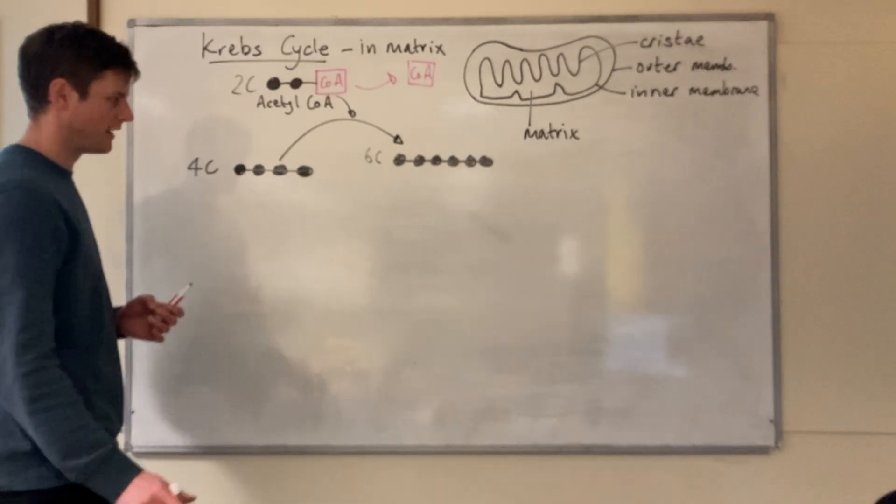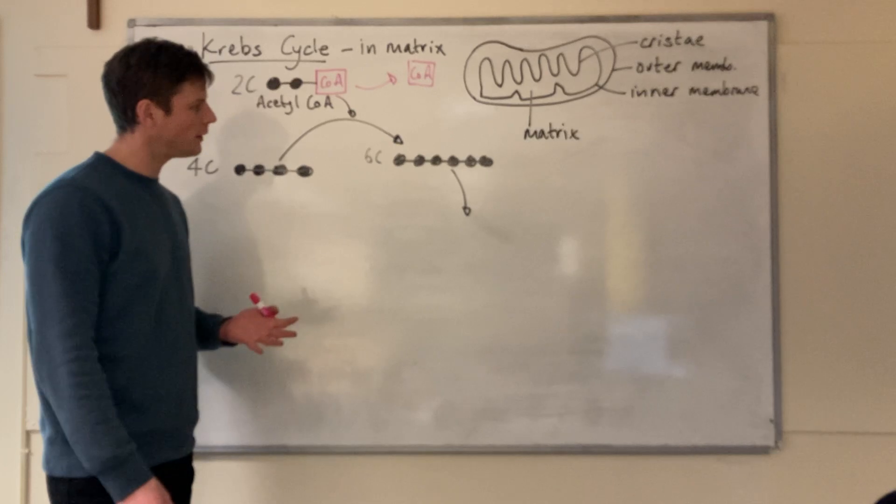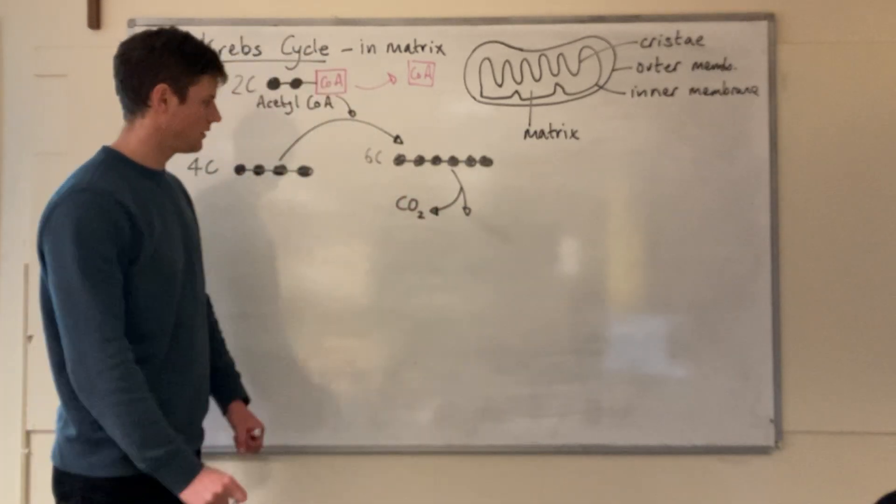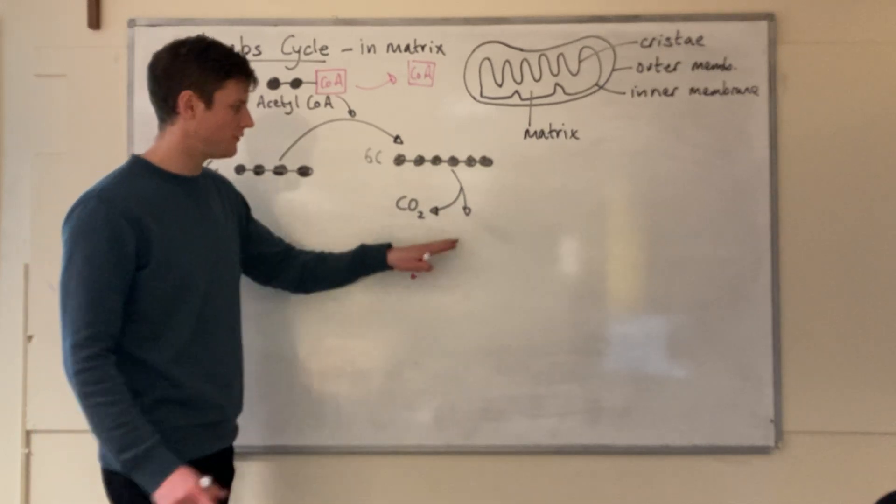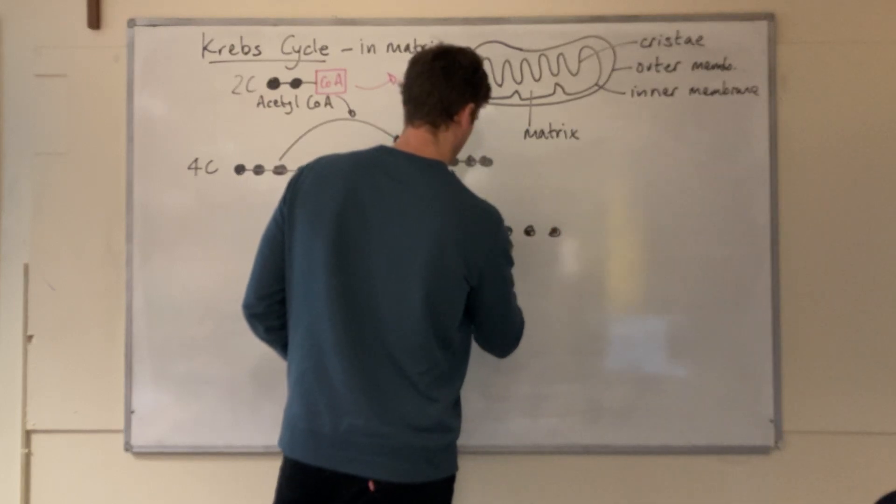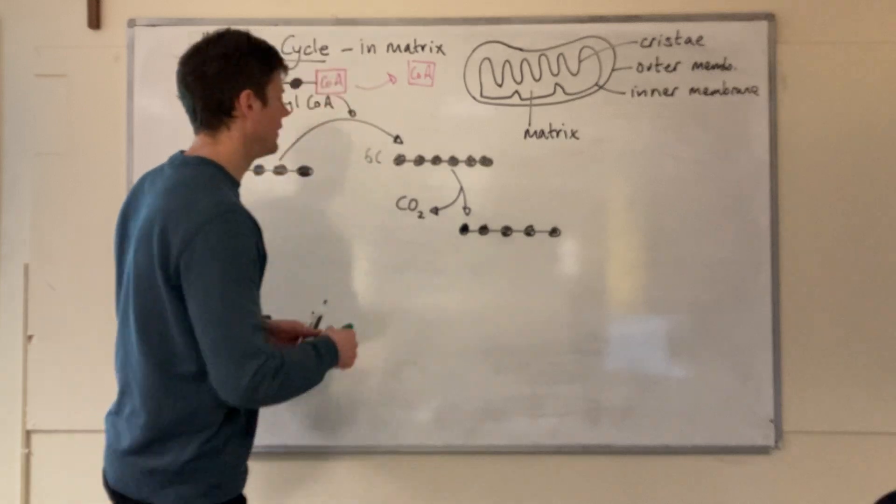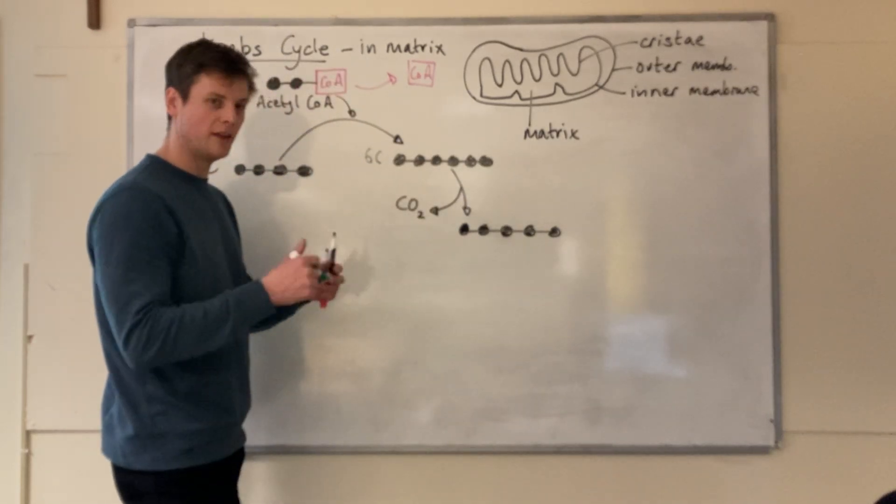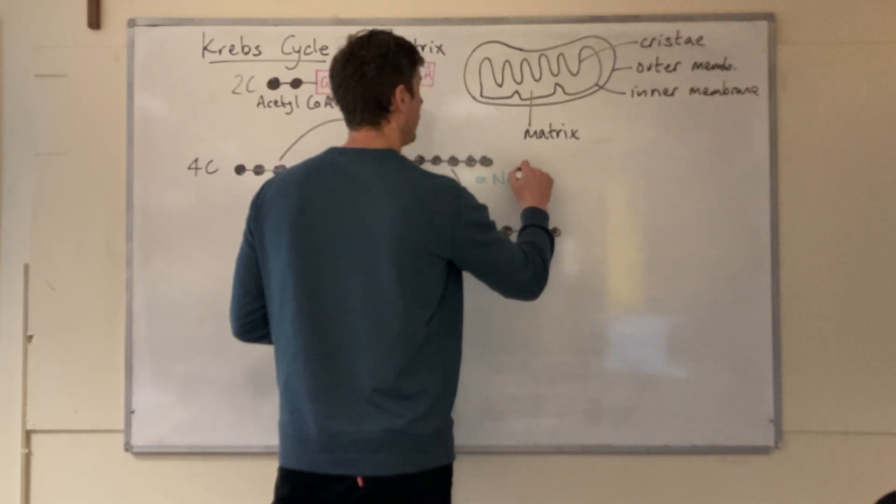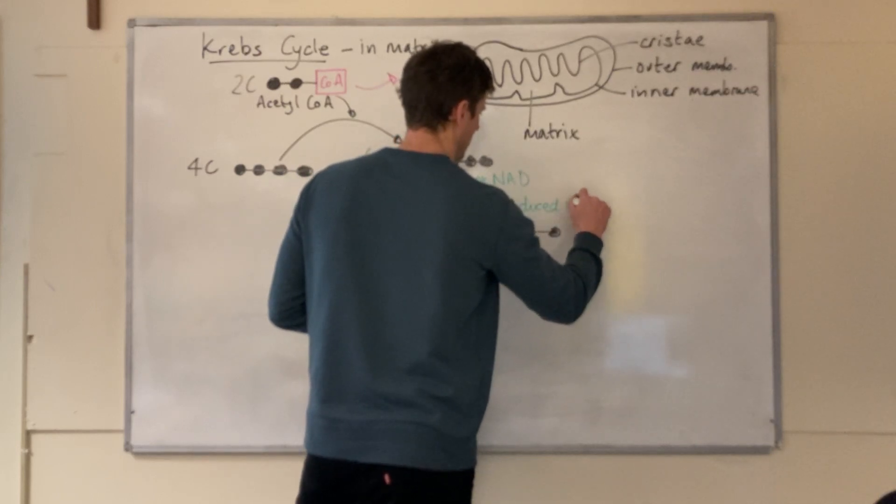In your notes, you'll see that in the first stage, that six carbon molecule undergoes decarboxylation. This word isn't on the specification, but I think it's quite a nice descriptive word. It loses carbon dioxide to form a five carbon molecule. During that stage, this decarboxylation, which is an example of an oxidation, is coupled with a reduction. That reduction involves oxidized NAD being reduced to form reduced NAD.